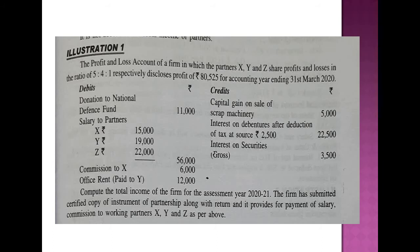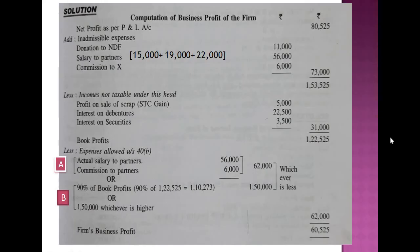The firm has submitted a certified copy of the instrument of partnership along with its return, which provides for payment of salary and commission to working partners X, Y, and Z. This means all partners are working partners and the payment of remuneration to these working partners is in accordance with the partnership deed. Hence the limit of remuneration under Section 40B will be deducted from the book profit.